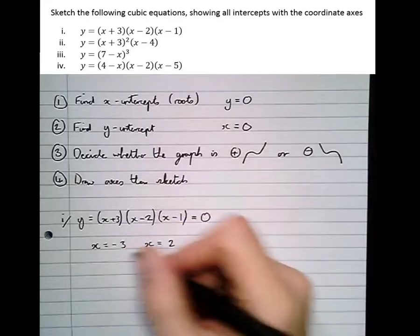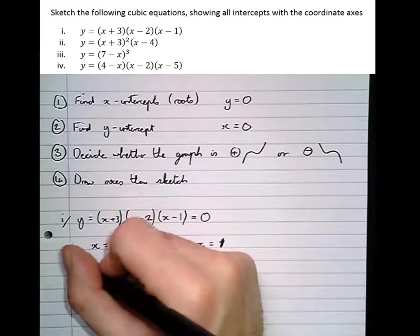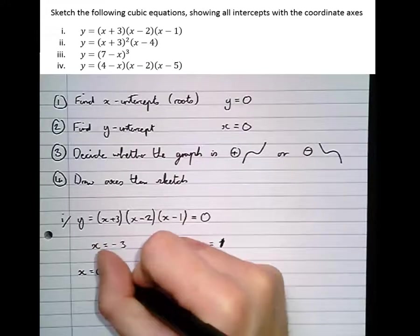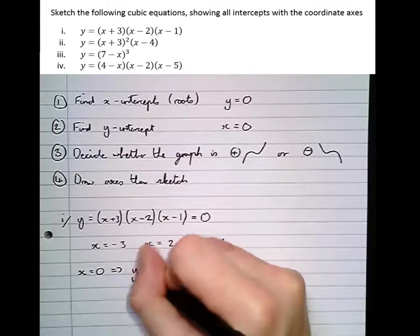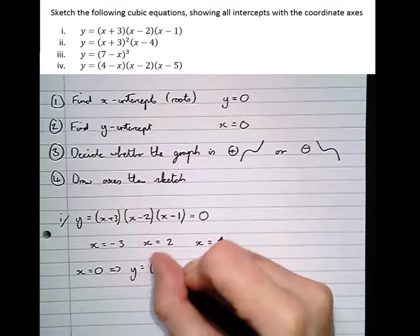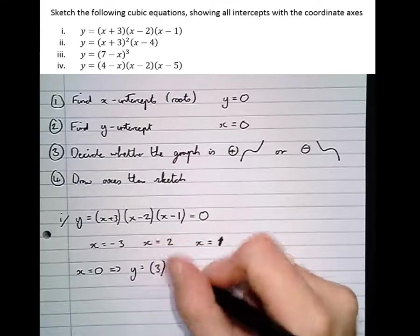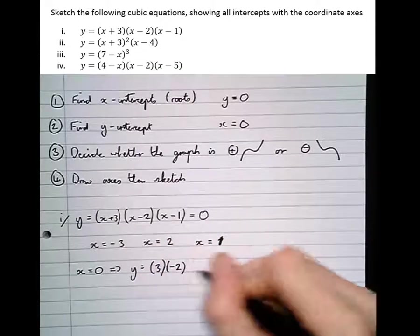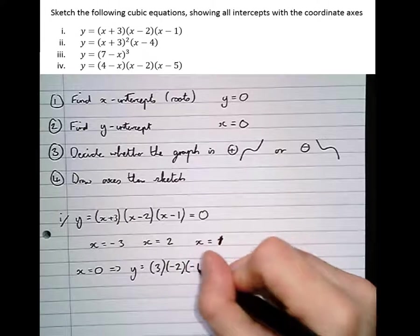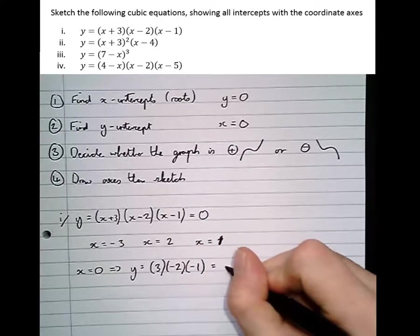The y-intercepts happen when x equals zero, so x equals zero, which means that y equals zero plus three, which is three, times zero minus two, which is minus two, times zero minus one, which is minus one, equaling six.